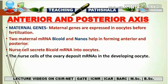Now let's begin with the anterior and posterior axis formation, starting with maternal genes. Maternal genes are expressed in oocytes before fertilization — this is a very important property. These genes express themselves before the meeting of sperm and egg, and at that time they exist in mRNA form. There are two main maternal mRNAs: bicoid and nanos, which help in the formation of the anterior and posterior axis.